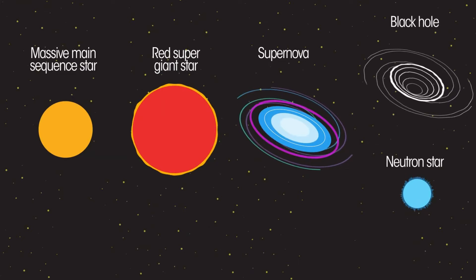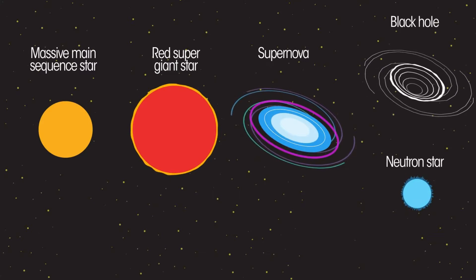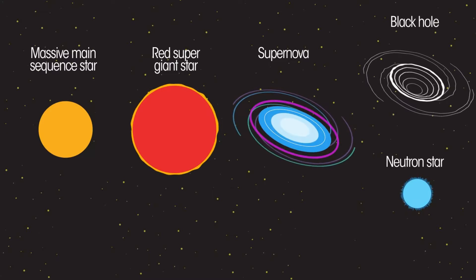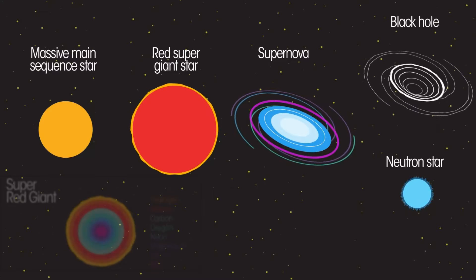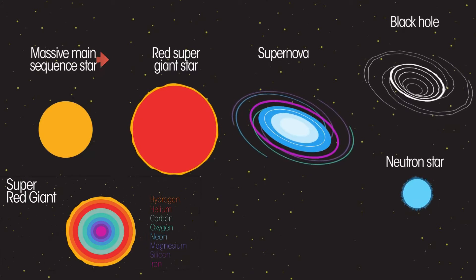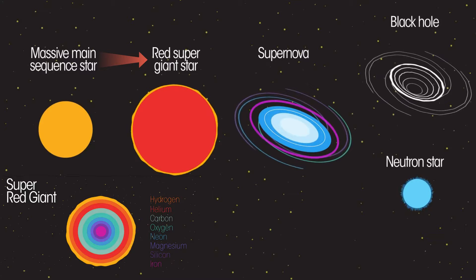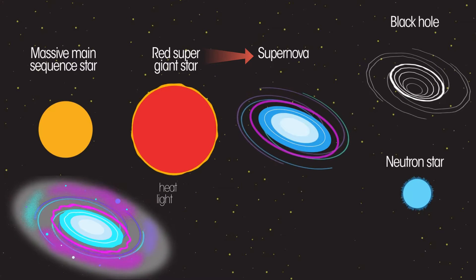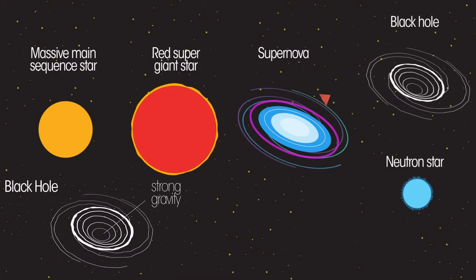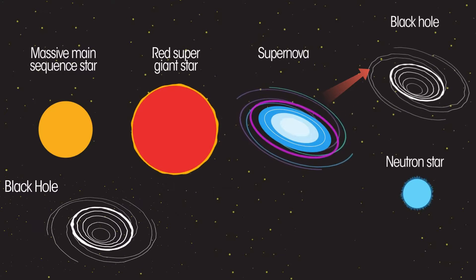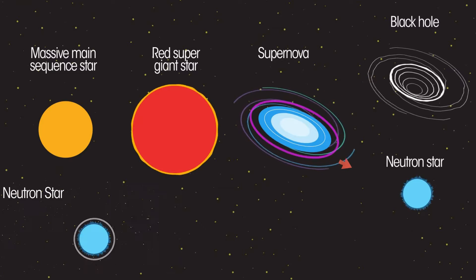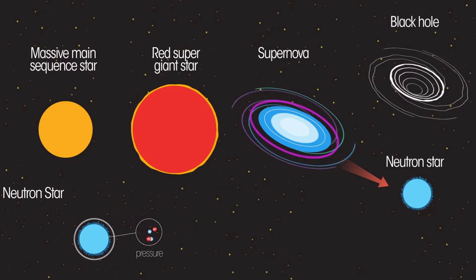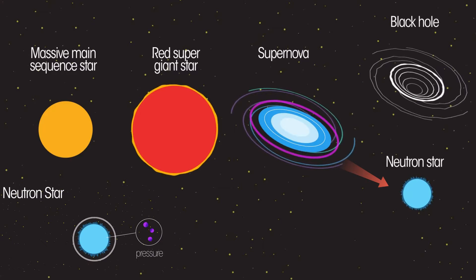So earlier I told you how black holes are formed — black holes are formed when stars die. Stars need to have enough mass to form a black hole. Some stars don't have enough mass to form a black hole, so they squeeze themselves and form a neutron star, and it spins rapidly and continues its stream.